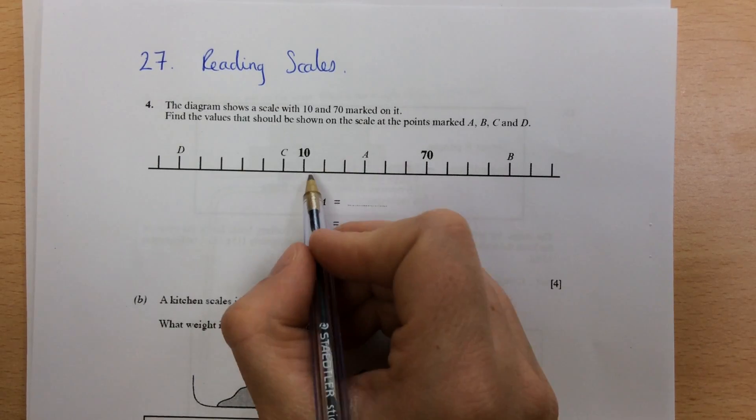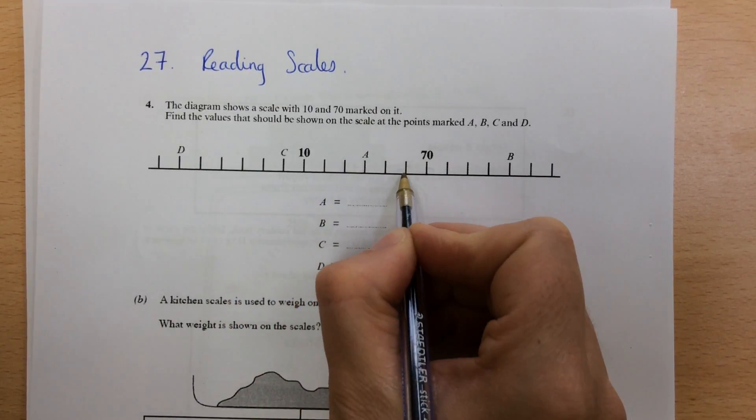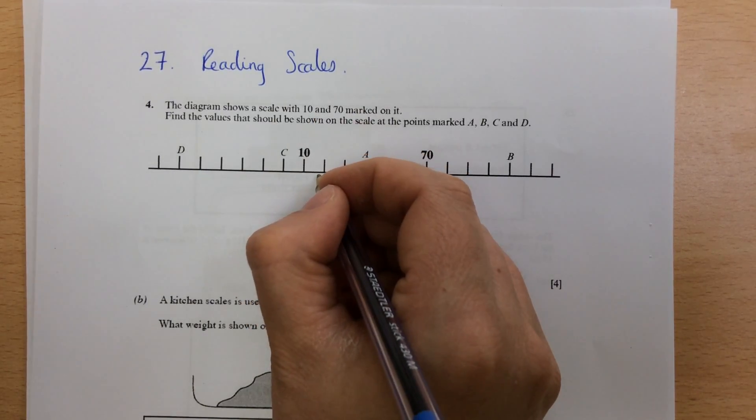So we've got 10 and we're going to 70. So let's check. 10, 20, 30, 40, 50, 60, 70. So each bar is worth 10.